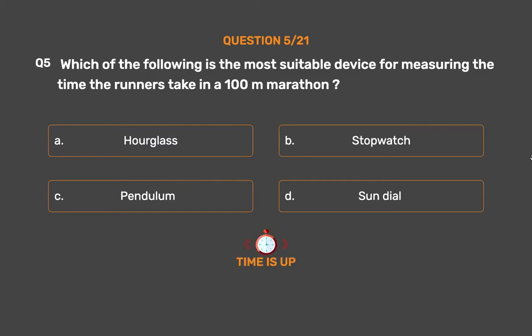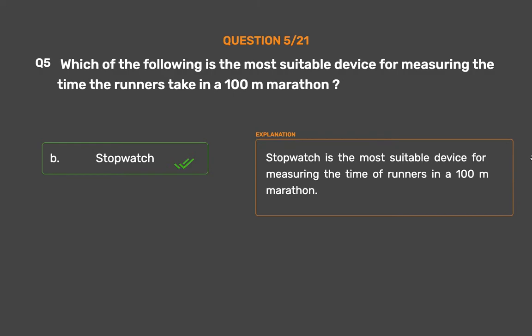The correct answer is Option B: Stopwatch. Stopwatch is the most suitable device for measuring the time of runners in a 100 meters marathon.